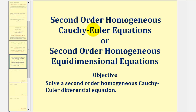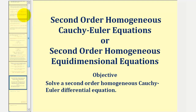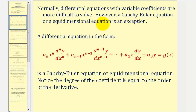Welcome to an example on how to solve a second order homogeneous Cauchy-Euler equation. Let's start with a review of what a Cauchy-Euler equation is. A Cauchy-Euler equation is a differential equation that fits this form here, and the main thing to notice is that for each term in the differential equation, the degree of the coefficient is equal to the order of the derivative.